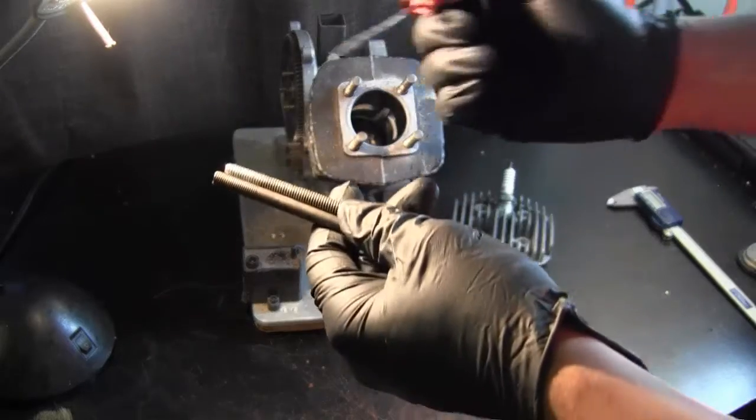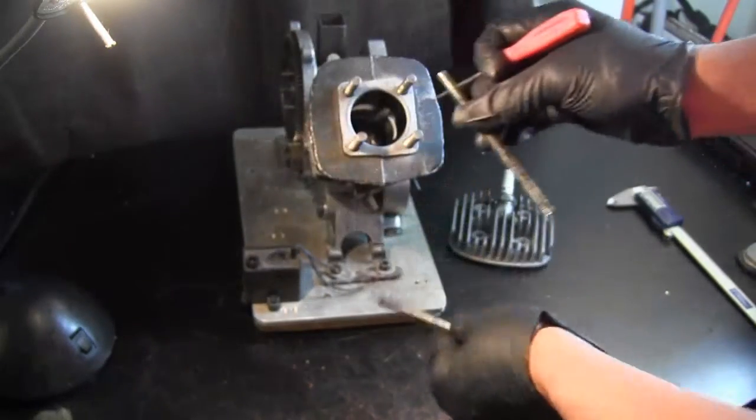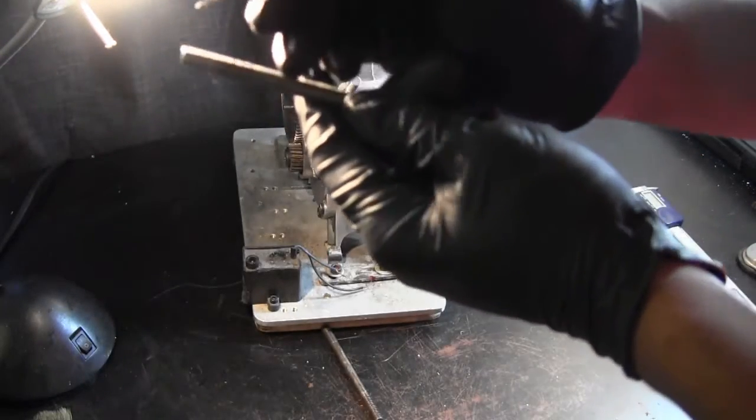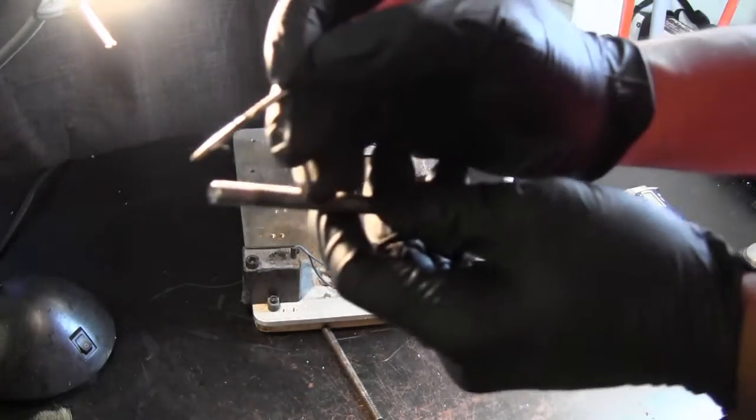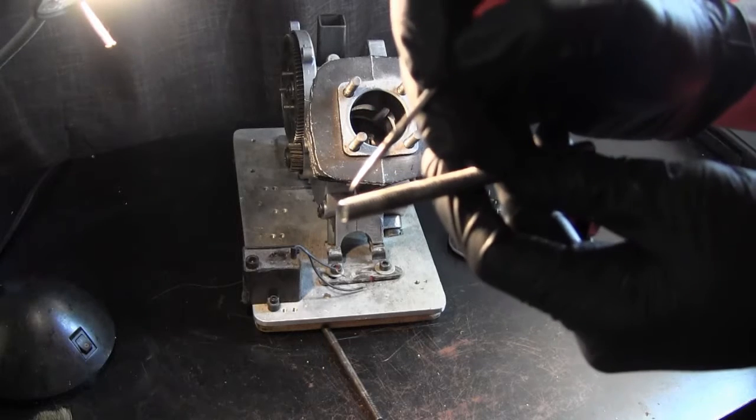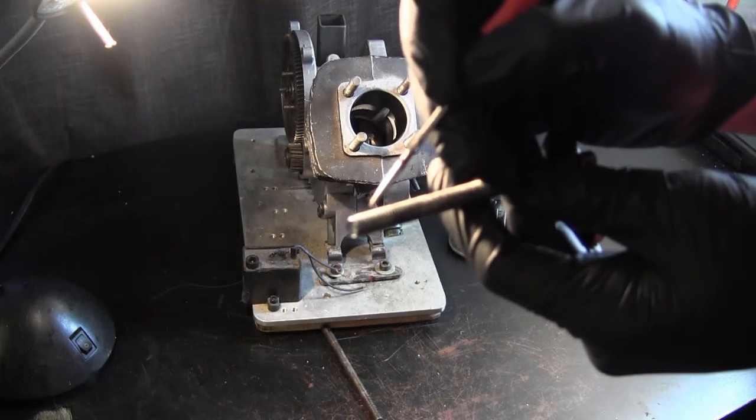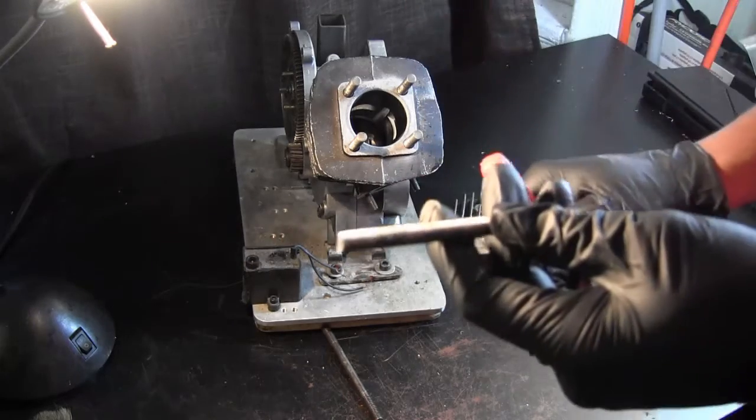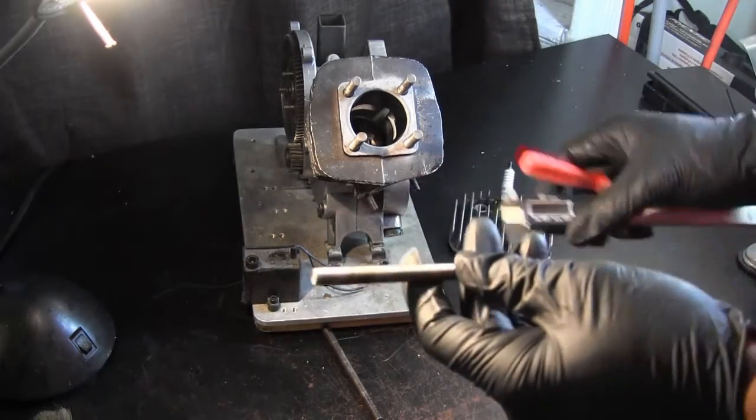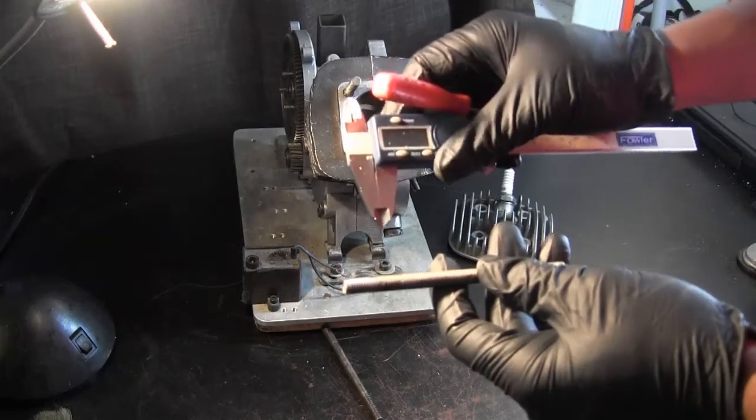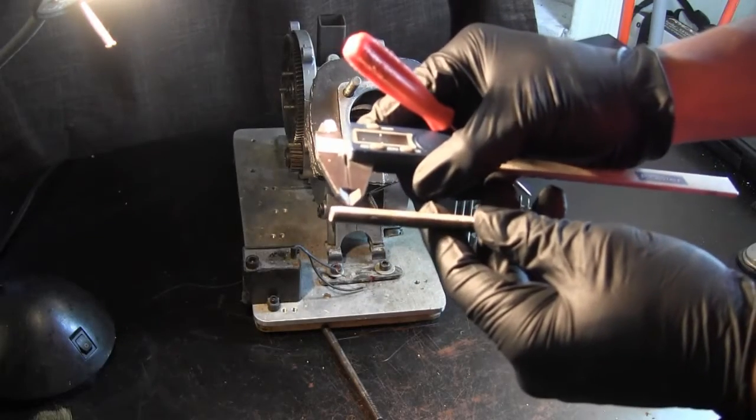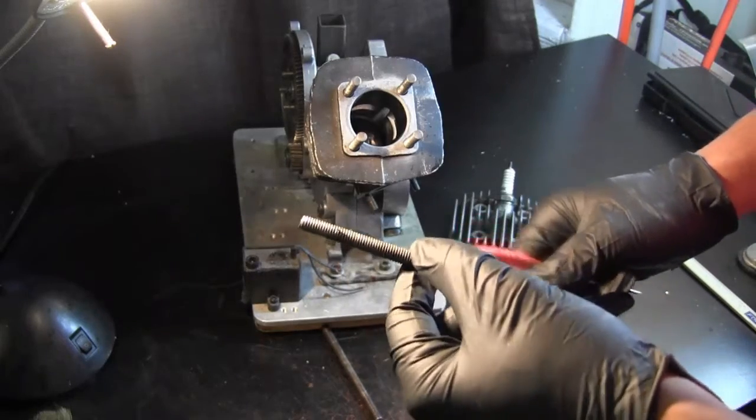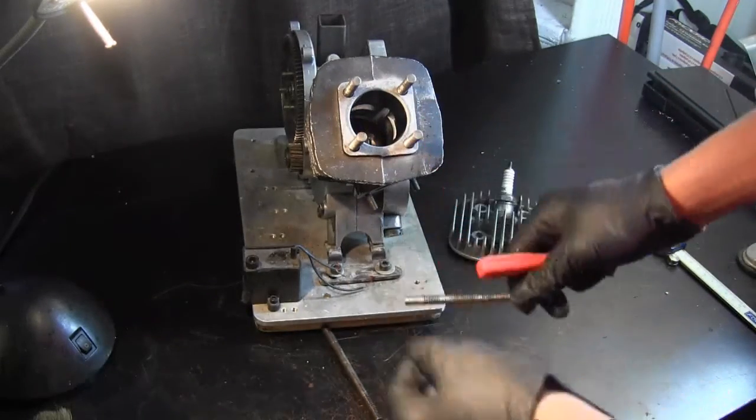Now what that means is, what I have here is an example of an m8 by 1.25 millimeter pitch. So basically between each and every one of these little threads is a distance of approximately 1.25. You can measure it using your digital caliper. You just measure the distance between these two threads, and that'll give you your calculation or distance rather.